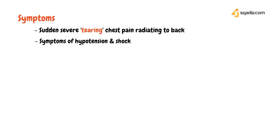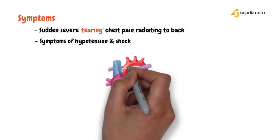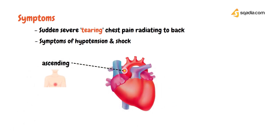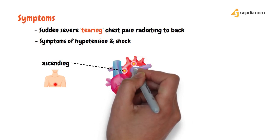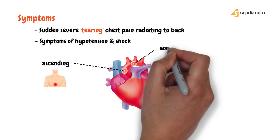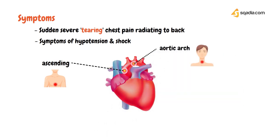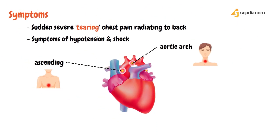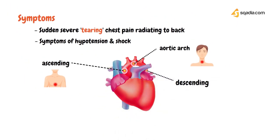The location of the severe pain can differ and depends on where in the aorta the tear occurs. If the tear is in the ascending aorta, the pain is felt on the anterior chest. Dissections originating in the aortic arch start as neck pain, whereas those in the descending aorta can start as shoulder pain or interscapular pain.